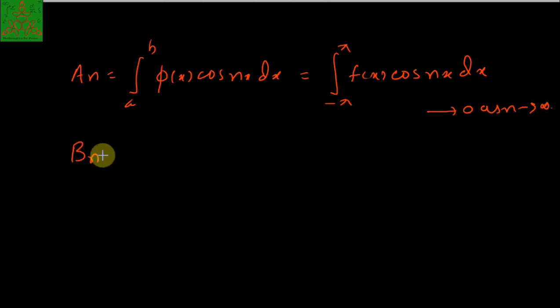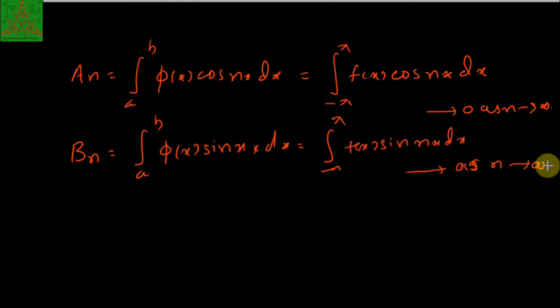And this already tends to 0 as n tends to infinity, as we have already proved just now. Similarly, for Bₙ we can write the same thing. That completes the proof of the Riemann-Lebesgue Lemma.